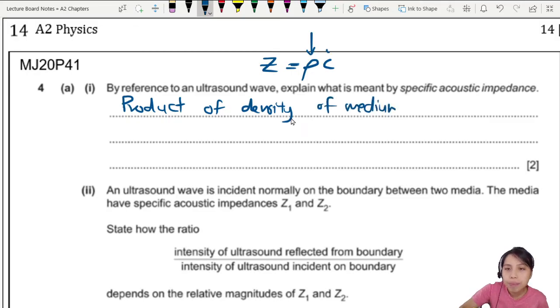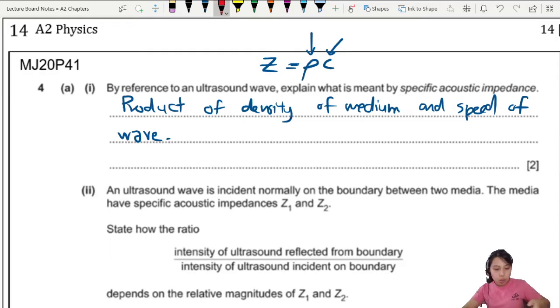And C... what is this? Not speed of light. No, no. This is the speed of your ultrasound wave. Or you can just say the speed of wave. That's two marks this time.